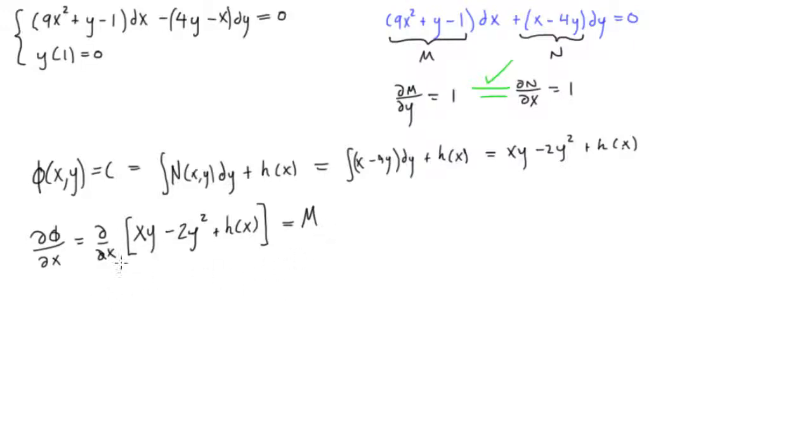Okay, so let's take the partial derivative of all this stuff with respect to x, so this becomes y, this is zero, and this will become plus h prime of x. Remember taking partial derivative of a function of only x, partial derivative with respect to x, that's just its derivative. And this is equal to M, which we had up here is 9x squared plus y minus 1. Alright, so we can go and subtract y from both sides, cross those out, and then we're left with h prime of x is equal to 9x squared minus 1.